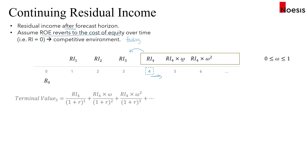The terminal value computed at period three equals the residual income in period four discounted back one year. For residual income in year five, we discount back two years to year three, and for year six, we discount back three years — hence the power of three.